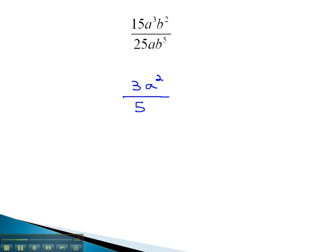As for the b's, when we subtract those, 2 minus 5, this gives us negative 3. The negative exponent tells us to move the b cubed to the denominator. This will become our simplified rational expression.